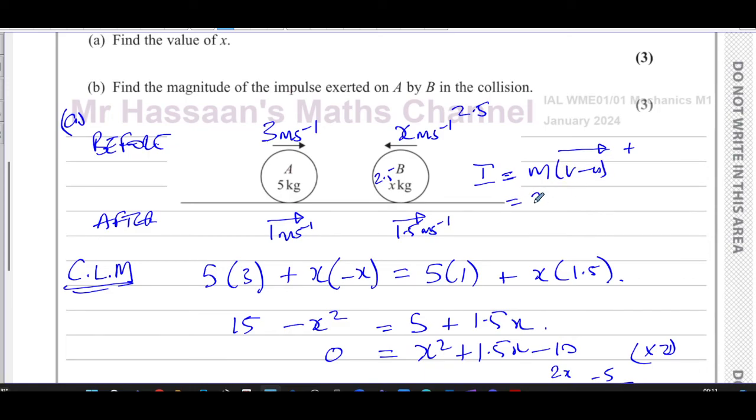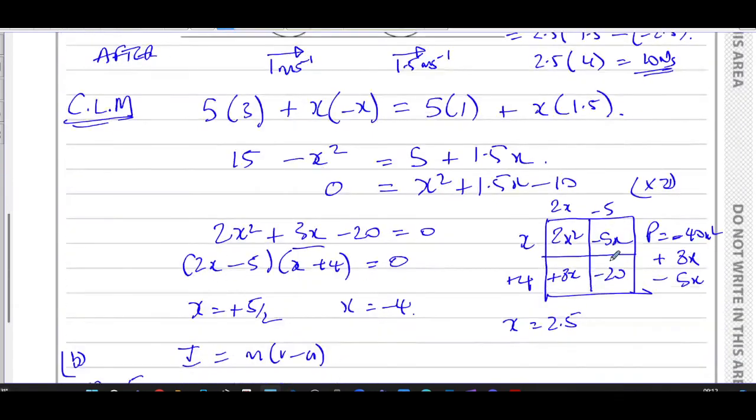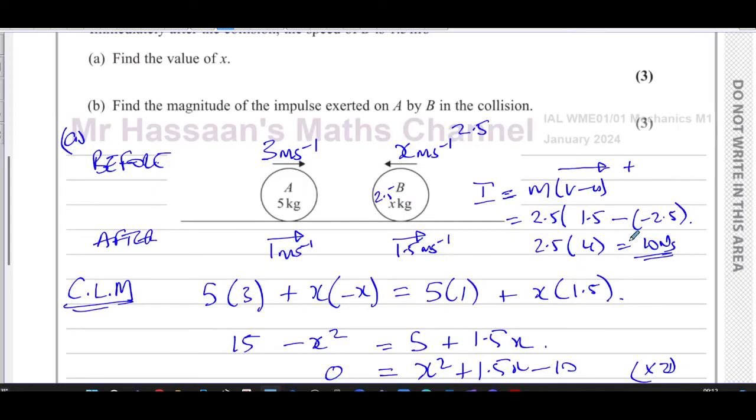That's going to be 2.5. The final velocity was 1.5 in the positive direction, and the initial velocity was 2.5 in the negative direction. So you end up with 2.5 times 1.5 plus 2.5. That's going to be 4, and 4 times 2.5 is 10 newton seconds. So we know that we have got the right answer because the impulses are the same.